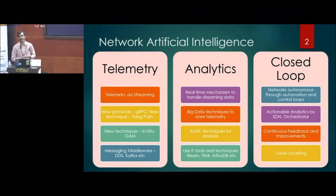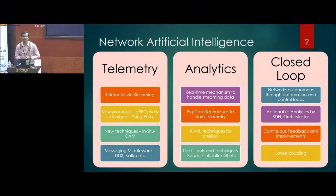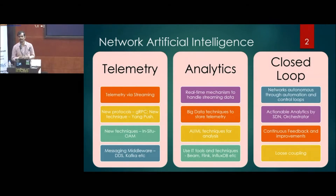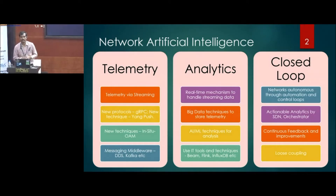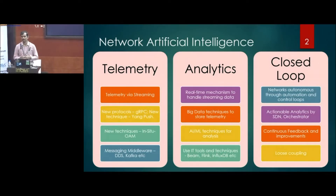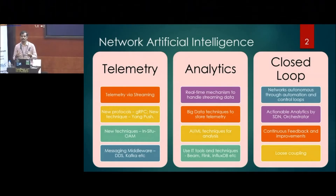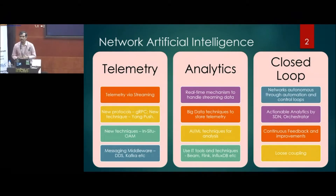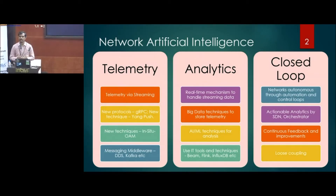We could also use analytics for creating self-healing networks, self-auto-bandwidth networks, and self-provisioning networks. For all these things, we want analytics to be real-time, so we should be able to churn massive amounts of data in real time using big data techniques and stream processing.